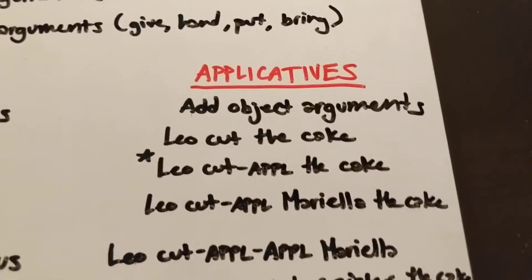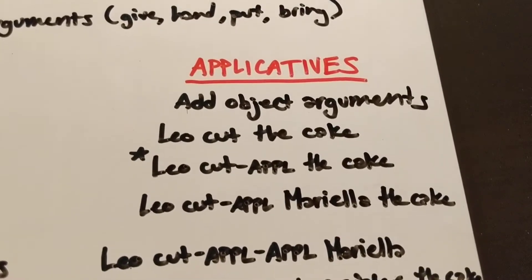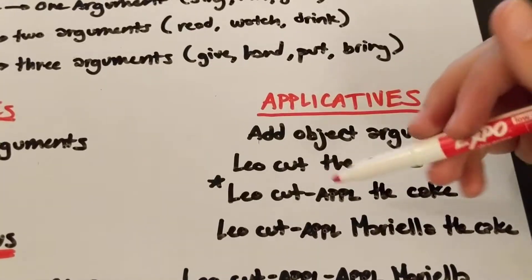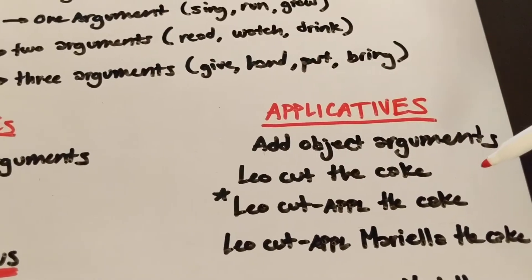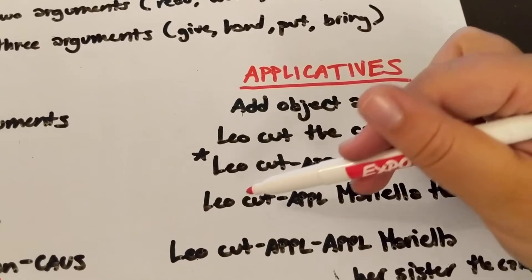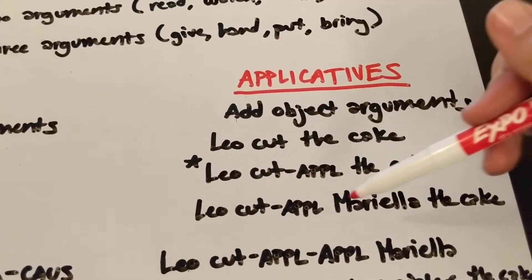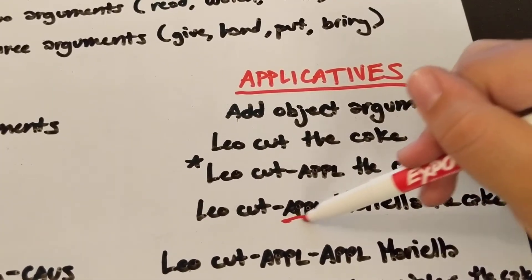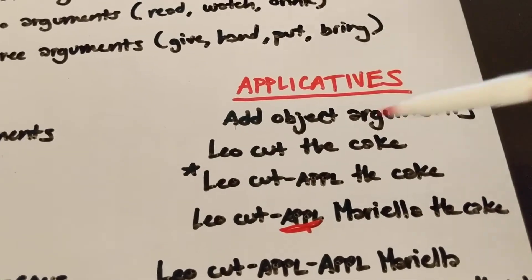So we can start with the sentence Leo cut the cake and add an applicative to it. And now you can't just say Leo cut the cake because you're waiting for your second object, right? So if we say Leo cut Mariela the cake with the applicative, which says that we need this, then it's grammatical.